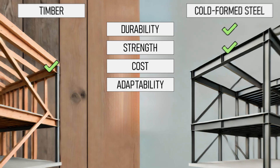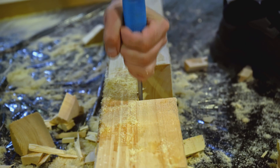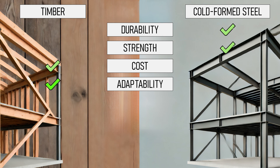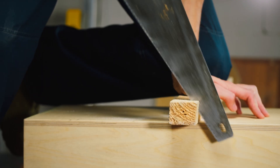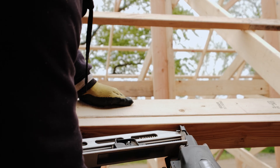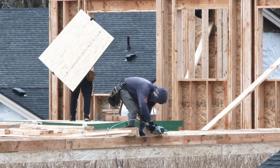Another benefit of timber structures is that they're more easily adaptable. All you need is a saw and a chisel and you can modify it easily on site. If something arrives and it's not quite right, you can modify it. With cold-formed steel you can do this too, but it's a lot harder. The customizability of timber definitely wins here — all you need is a saw, some chisels and nails, and you can modify that structure to however you need. Timber really wins out for easy on-site modifications.